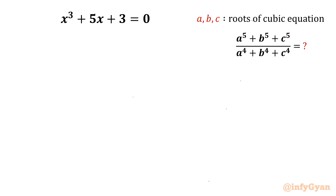Welcome back to Infigyan, my dear friends. Today in this video we are going to take up one very interesting puzzle from cubic equations. The equation x³ + 5x + 3 = 0 is given, where a, b, c are the roots of this cubic polynomial, and we have to simplify the expression (a⁵ + b⁵ + c⁵) / (a⁴ + b⁴ + c⁴).